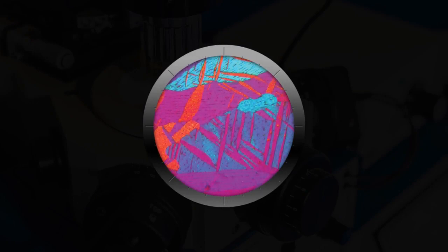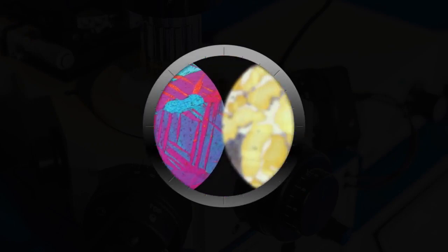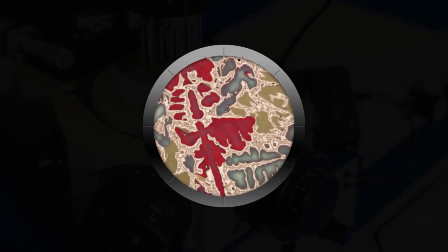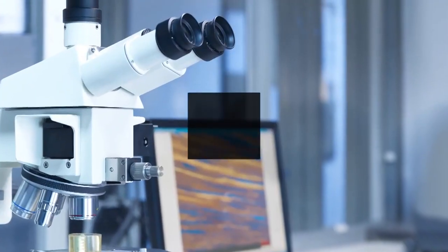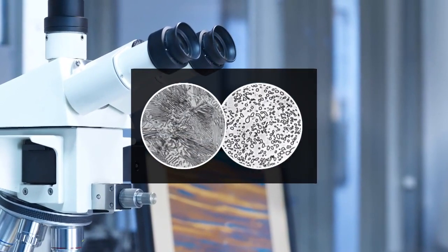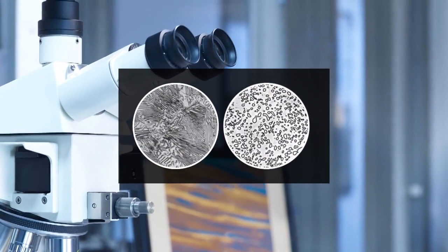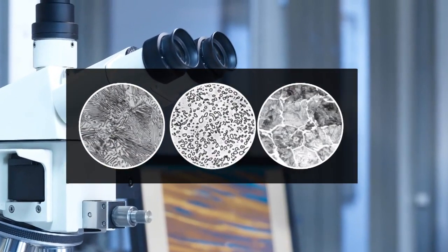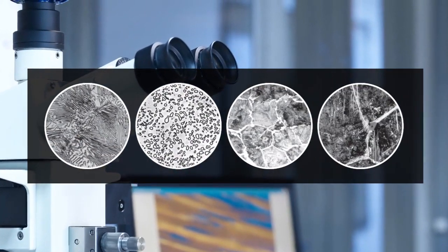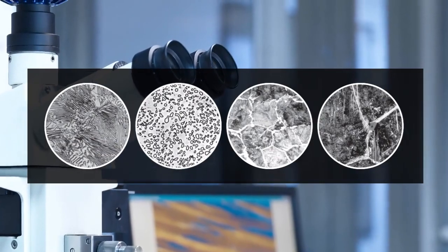The importance of microstructure in influencing the properties of metals and alloys has long been recognized. Grain size, shape, and the distribution of second phase particles are important in determining the behavior of most structural metals.